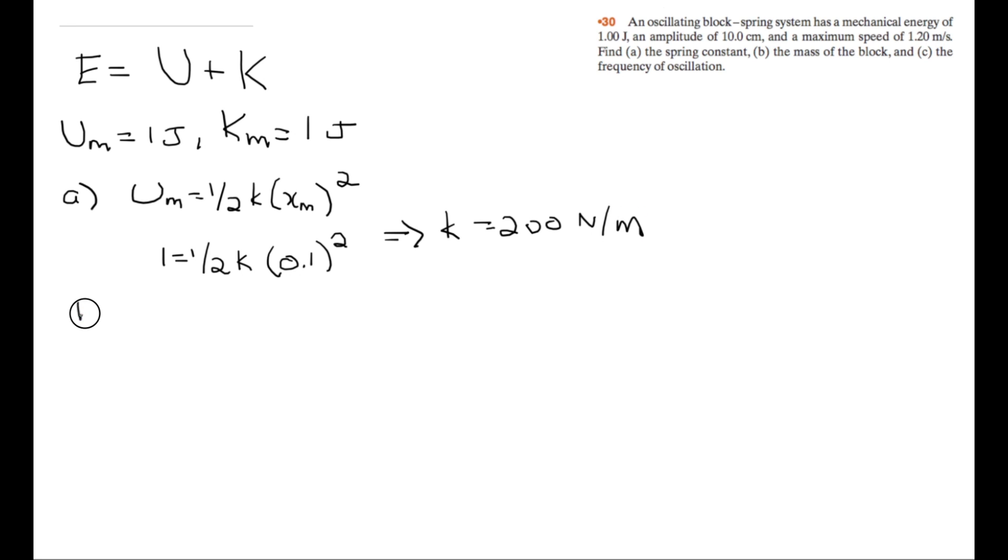Okay, for B, the mass of the block, we just use Km. So the maximum kinetic energy is equal to one half m times the amplitude of the velocity, so the maximum velocity. And we know what the maximum velocity is, we know what the maximum kinetic energy is, which is one joule. So one joule is equal to one half times the mass times 1.20 squared. And if we solve this, mass is equal to 1.38 repeating, but we'll just cut it off at 1.389.